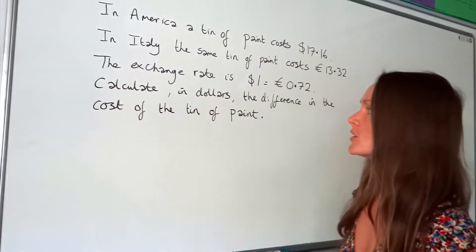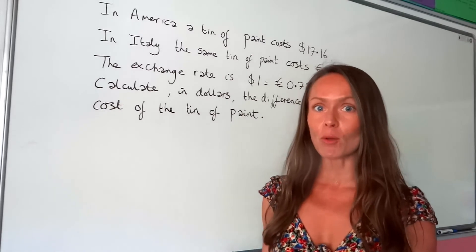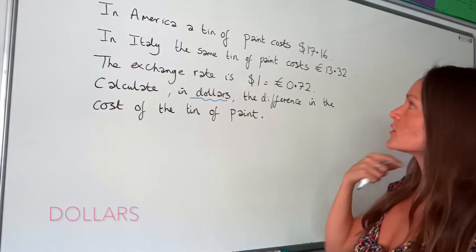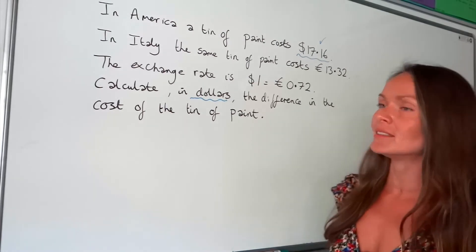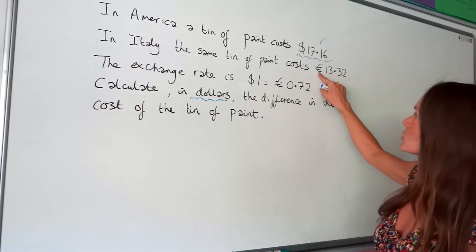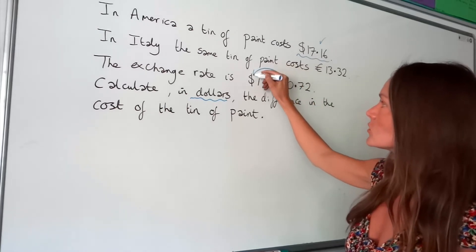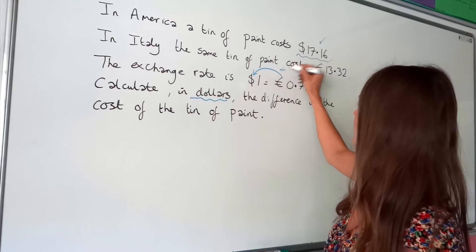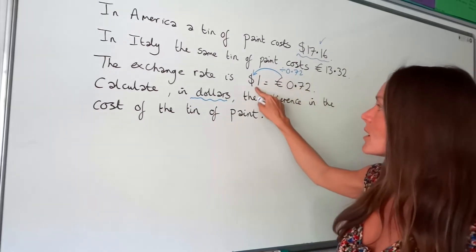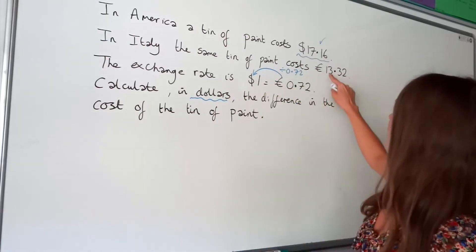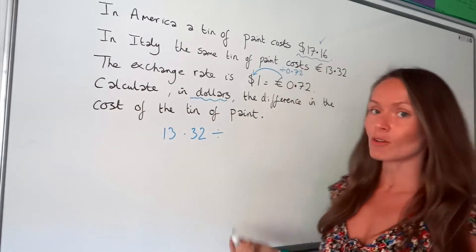In this exam question, to work out the difference in the cost of the tin of paint in America and Italy, we need to make sure both costs are in dollars. The first tin in America is already in dollars, so that's fine. But we need to change the tin of paint in Italy, which is in euros, into dollars. Using the exchange rate, to change euros into dollars I need to divide by 0.72 — because 0.72 divided by itself is 1 — so I divide 13.32 by 0.72.